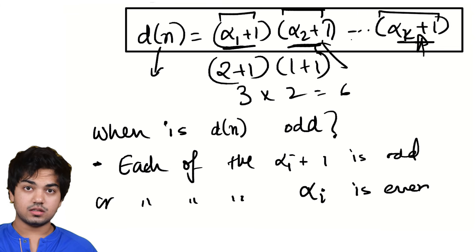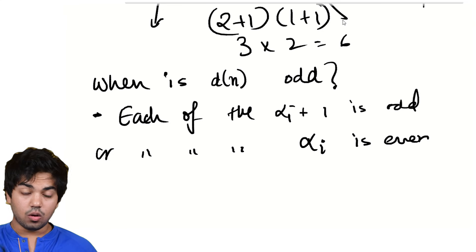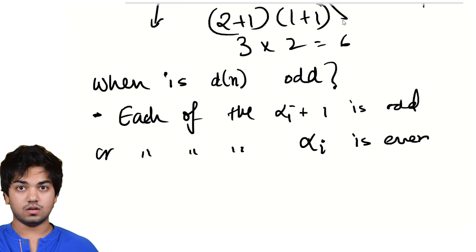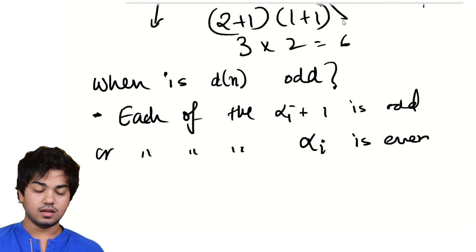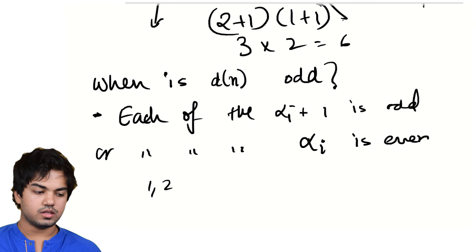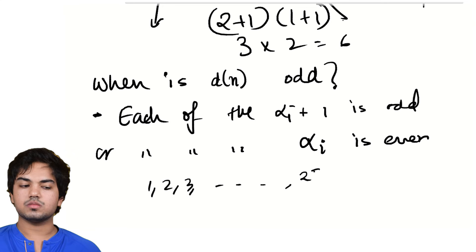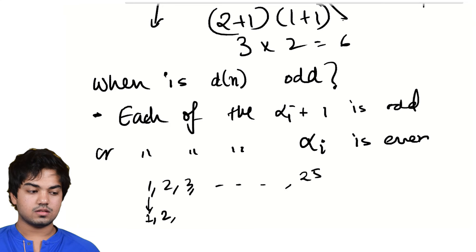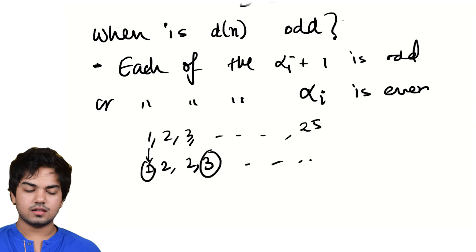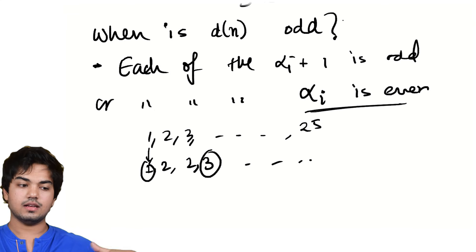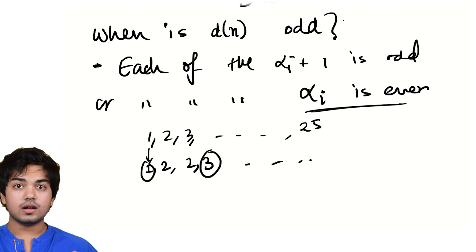So when is d(n) odd? It's odd when each of these numbers is odd. Because if even one of them was even, d(n) would be even. So it's odd exactly when each of the alpha i plus one is odd, or each of the alpha i is even. So if each of the exponents that show up in the prime factorization of n, if all of them are even, that is the only situation where d(n) is odd. In all other cases, it's even. You could have arrived at this, like you could have done this by inspection, maybe. You just looked at the divisor function. If you wrote down one, two, three, four, look at the first, say, 25 numbers, and you wrote down the number of divisors, one is one, two is two, three is two, four is three. If you looked at it like this, you would have noticed yourself that the only time the number of divisors is odd is exactly when the number is a square.